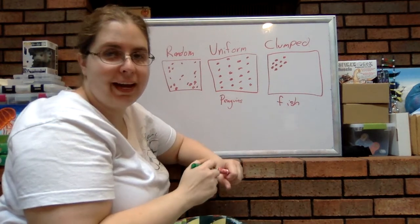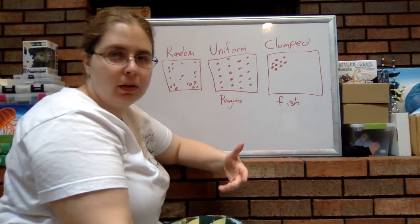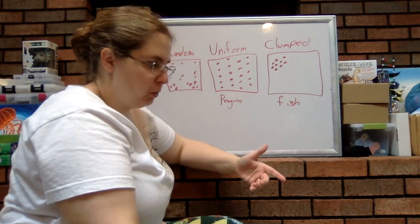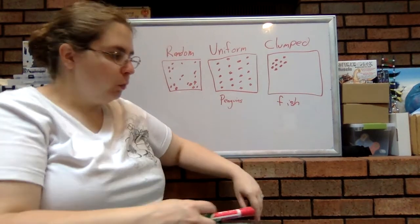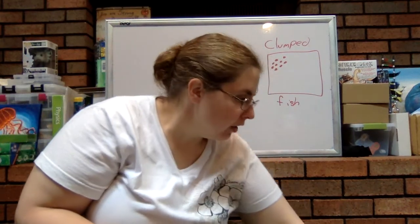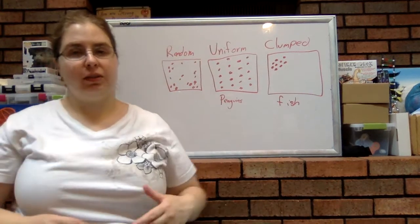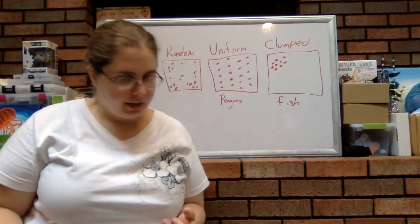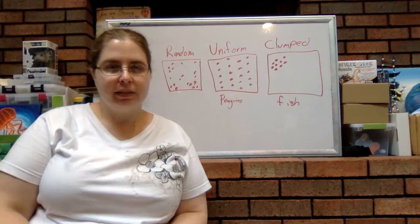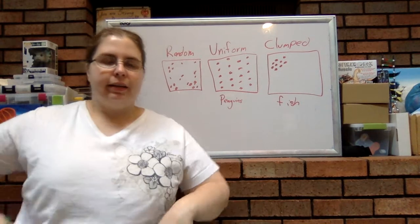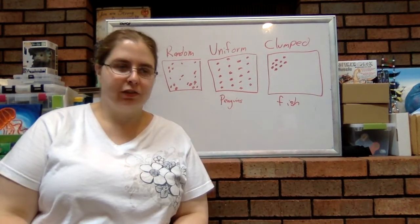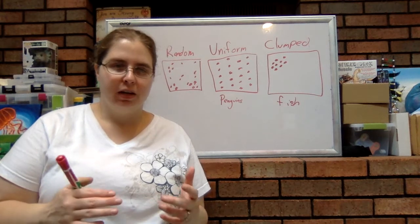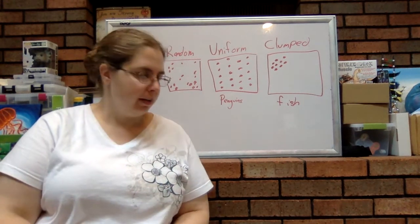There's really no pattern to how the individuals are spread out. Now, the reason why for this one is because resources are spread out pretty evenly throughout the entire ecosystem. Since the resources are more abundant and they're spread out equally, there's less competition. So there's not as much pressure to be in one area than another.